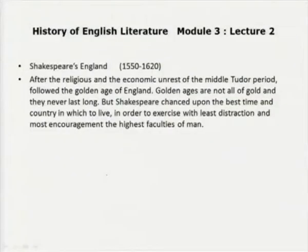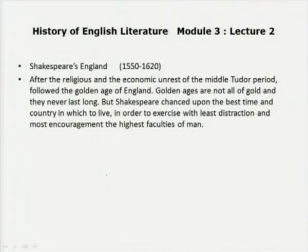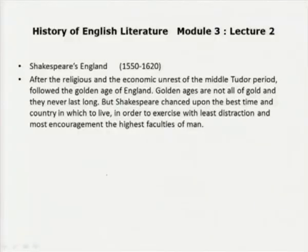Here we are doing Elizabethan English — the Age of Elizabeth or Shakespeare's England — from 1550 to 1620. This was a very golden period of English literature. After the religious and economic unrest of the middle Tudor period followed the golden age of England. There was religious tolerance and calm. Golden ages are not all of gold, naturally, and they never last long, but Shakespeare sounds upon the best time and country in which to live, in order to exercise with least distraction and most encouragement the highest faculties of man.